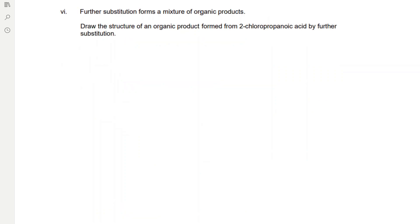Further substitution forms a mixture of organic products. Draw the structure of an organic product formed from 2-chloropropanoic acid by further substitution. The 2-chloropropanoic acid is going to react with further chlorine radicals, so for example you could form 1,2-dichloropropanoic acid.